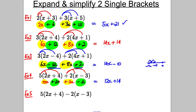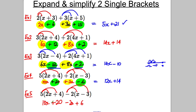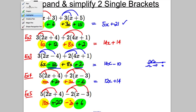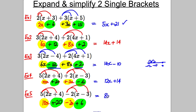And the last example. 5 multiplied by 2x is 10x. 5 multiplied by positive 4 is positive 20. Negative 2 multiplied by x is negative 2x. And negative 2 multiplied by negative 3 is positive 6. So let's combine these: 10x take away 2x, and we've got positive 20 and positive 6. So we've got 10x take away 2x is 8x, and 20 add 6 is positive 26.